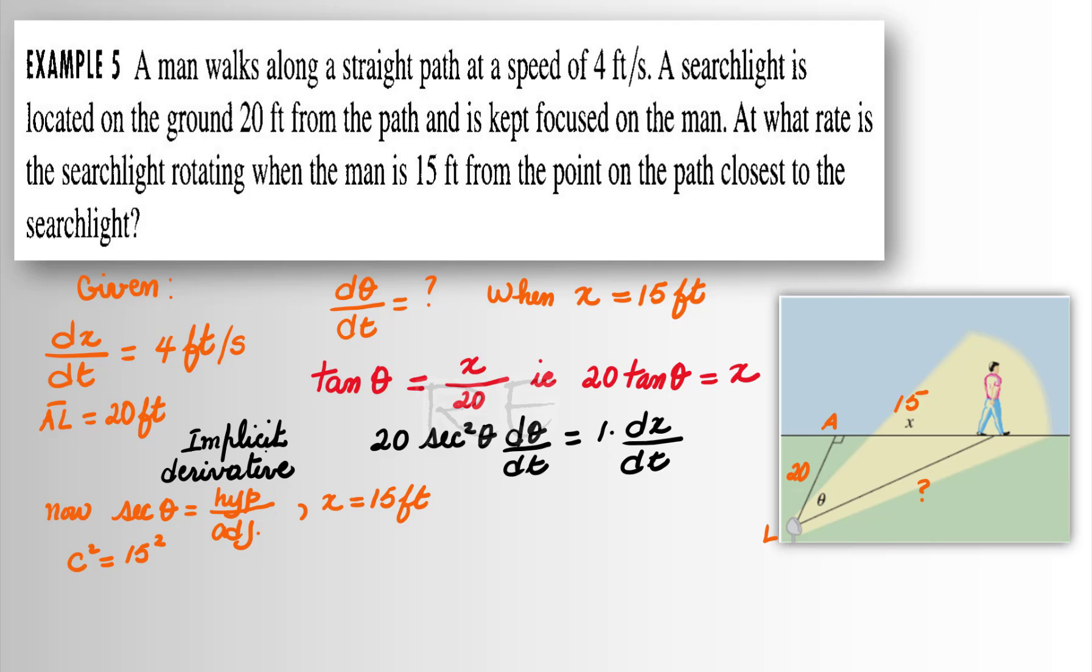The hypotenuse c² is equal to 15² plus 20². And c is the square root of 15² plus 20², which is 25.